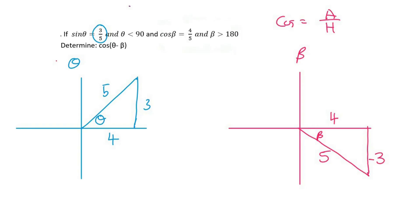Now that's the difficult part done. But now what some students still seem to do when they see this is they're like, oh, okay, so that's just going to be cos theta minus cos beta. No, no, no, guys.